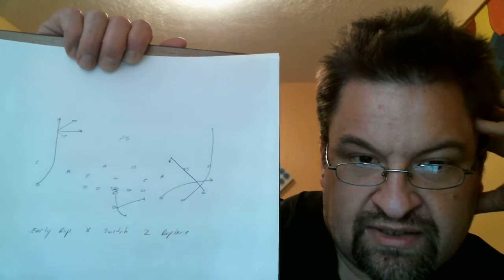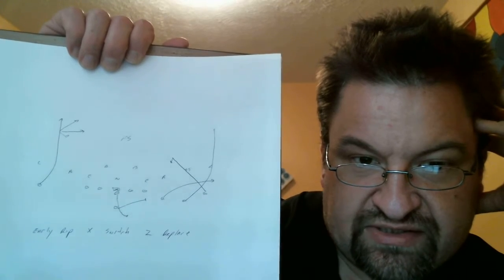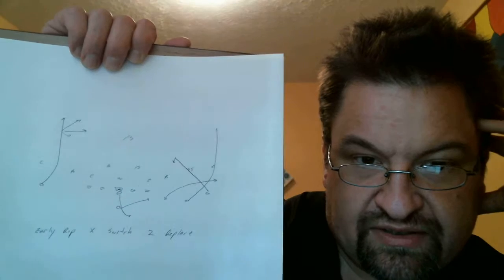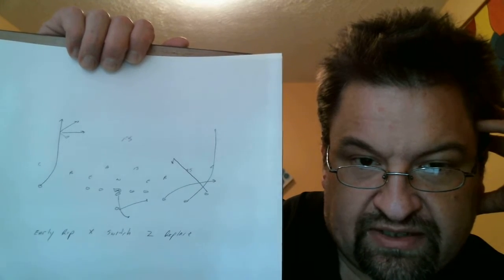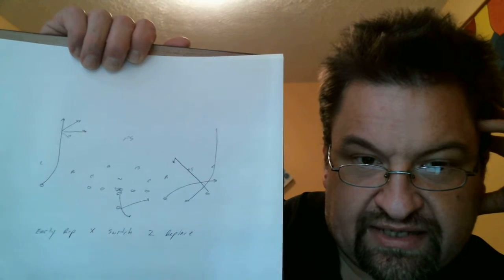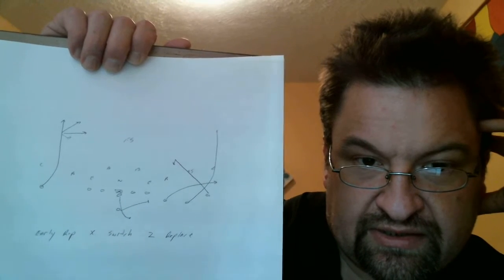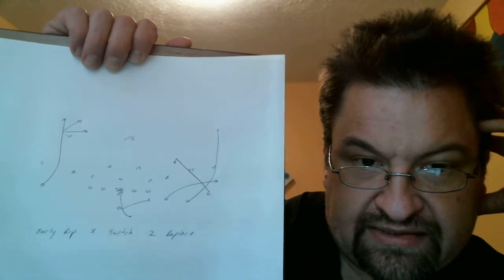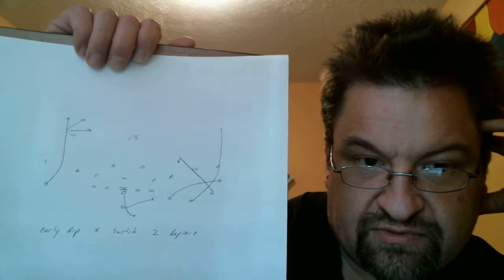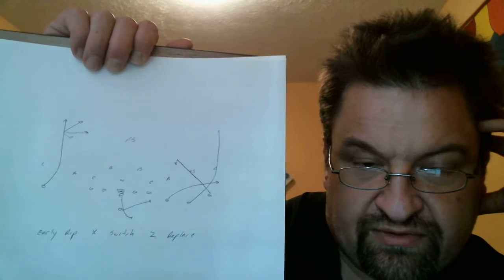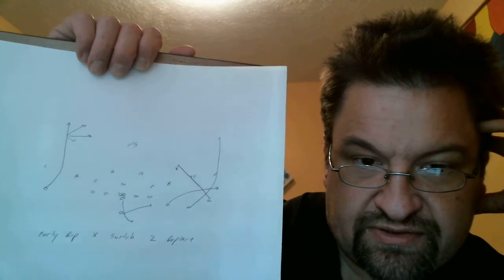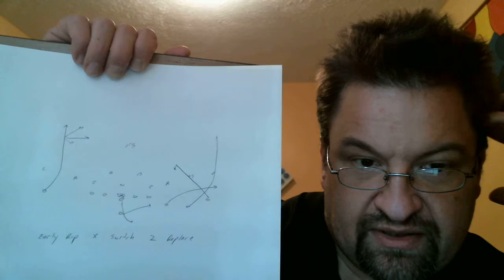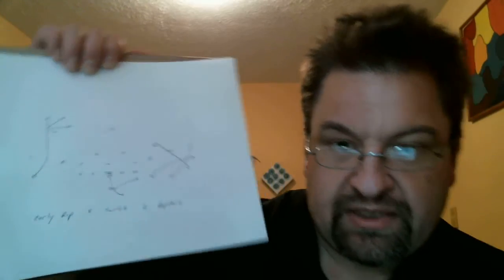If he does, look for the replace route. If that strong safety bails back and takes away the replace, and your corner attacks the flat route, then you have a chance with the wheel. And if all three of them are covered, check backside for the switch route. A myriad of choices - that's early rip X switch Z replace.